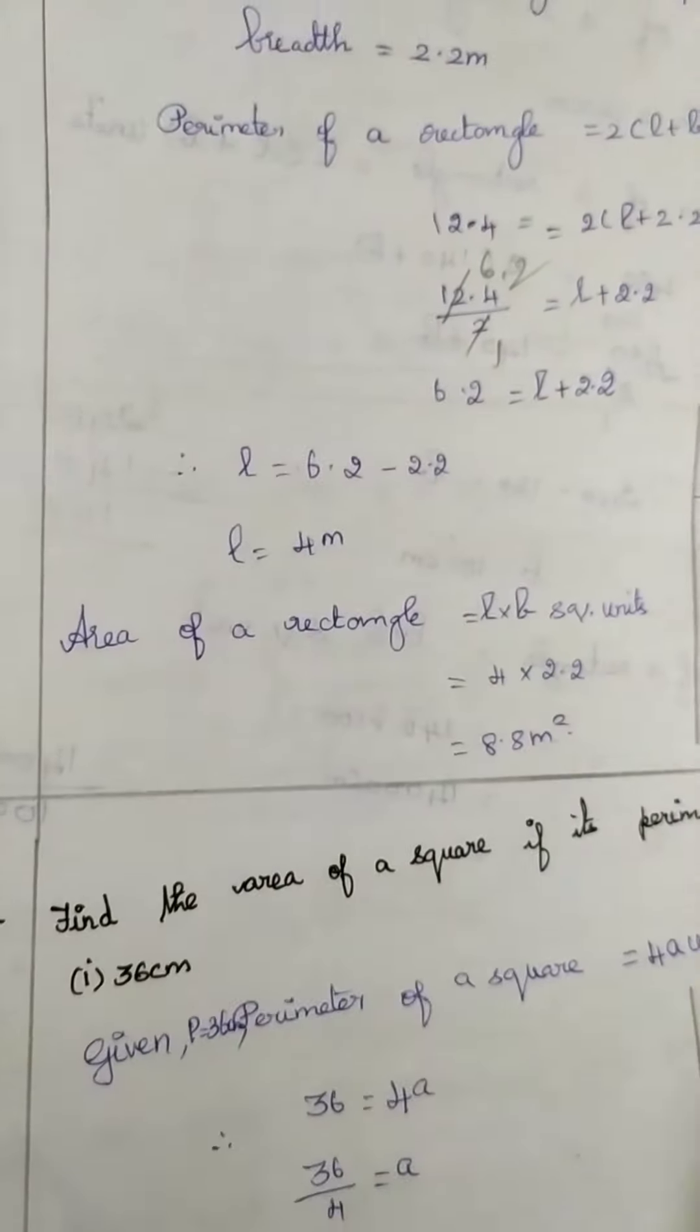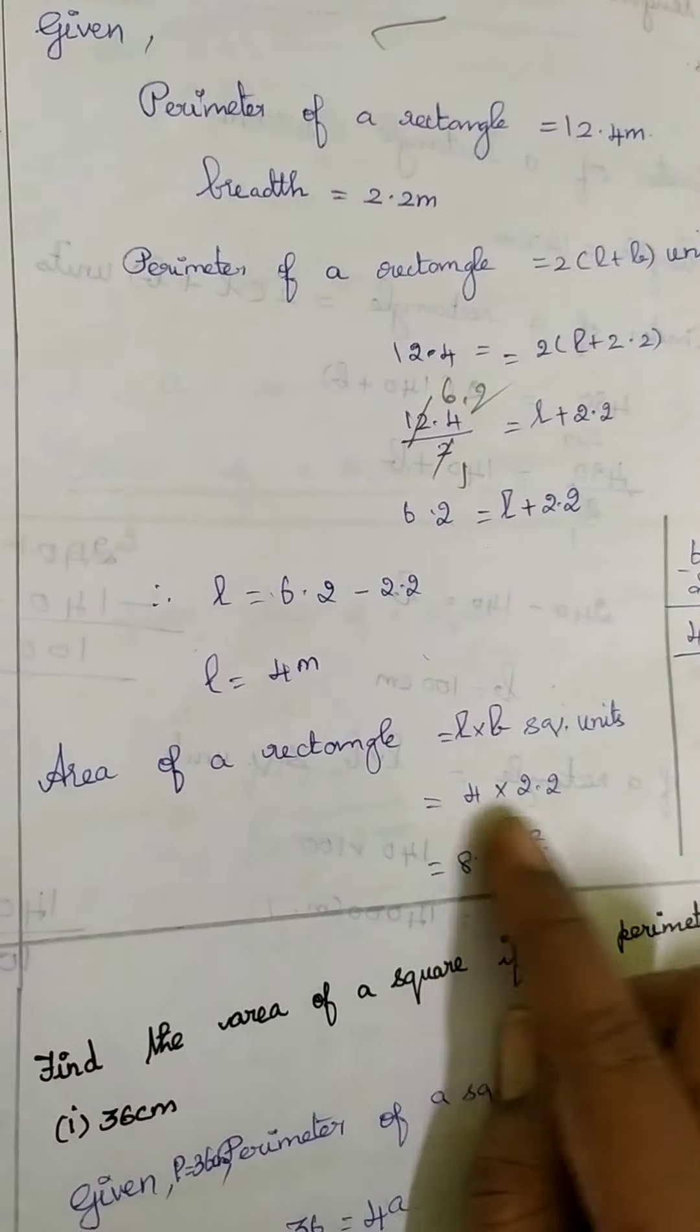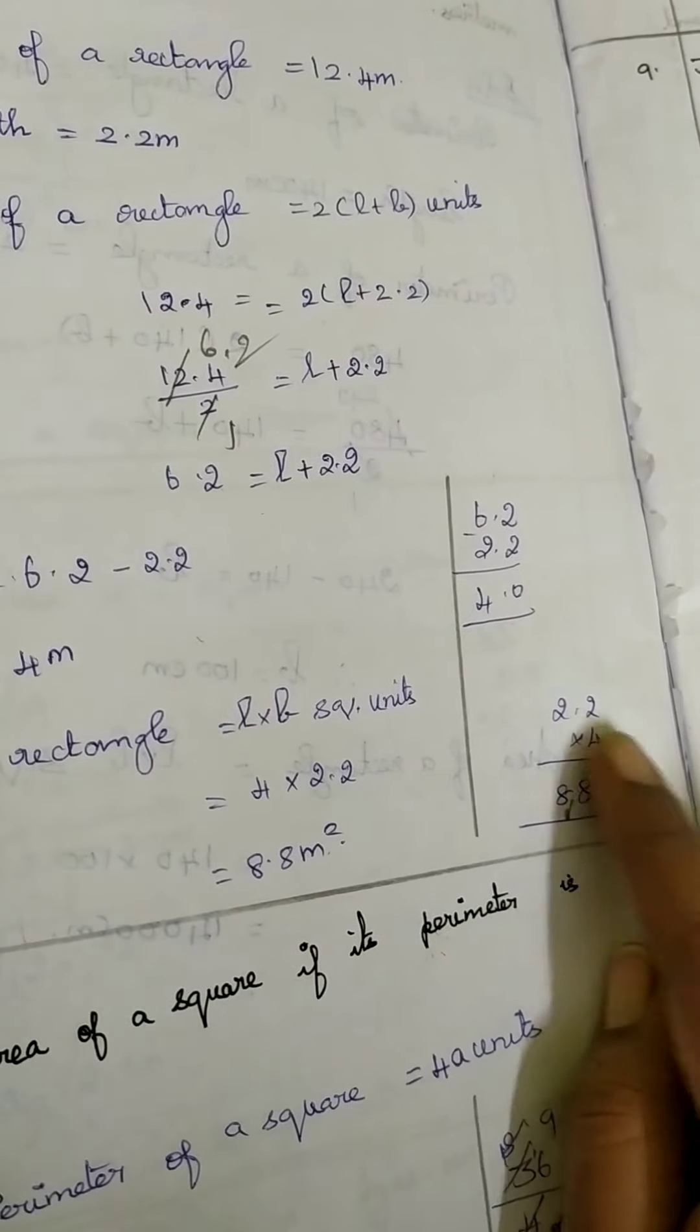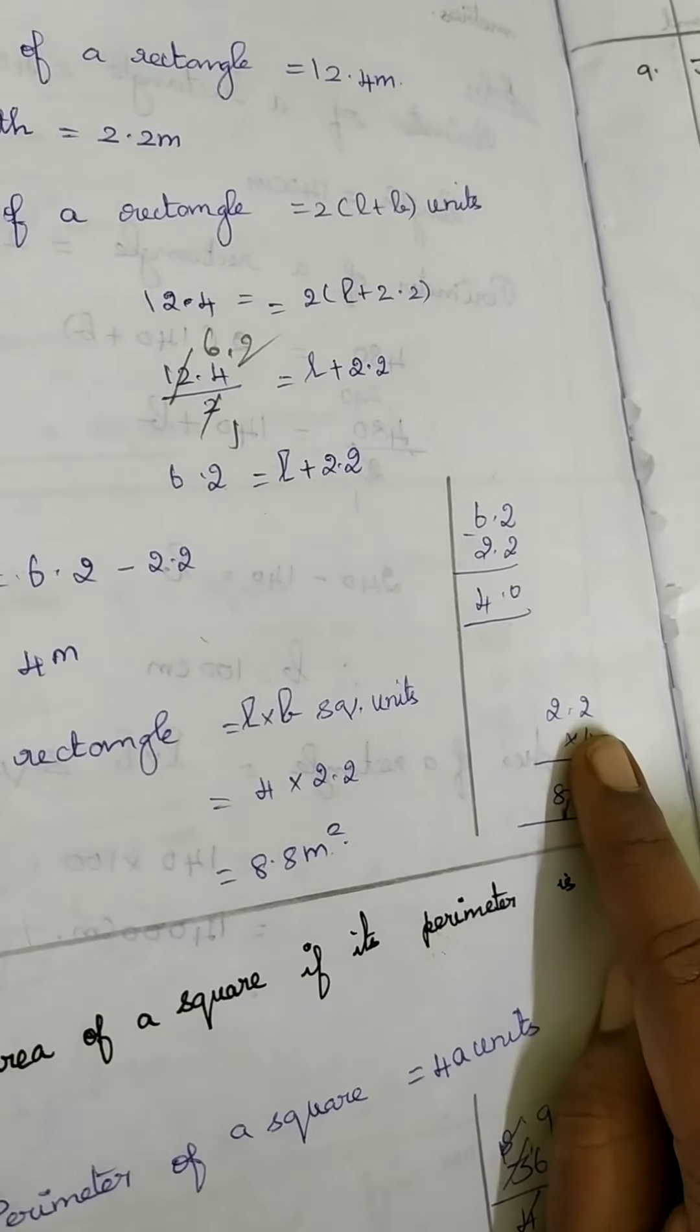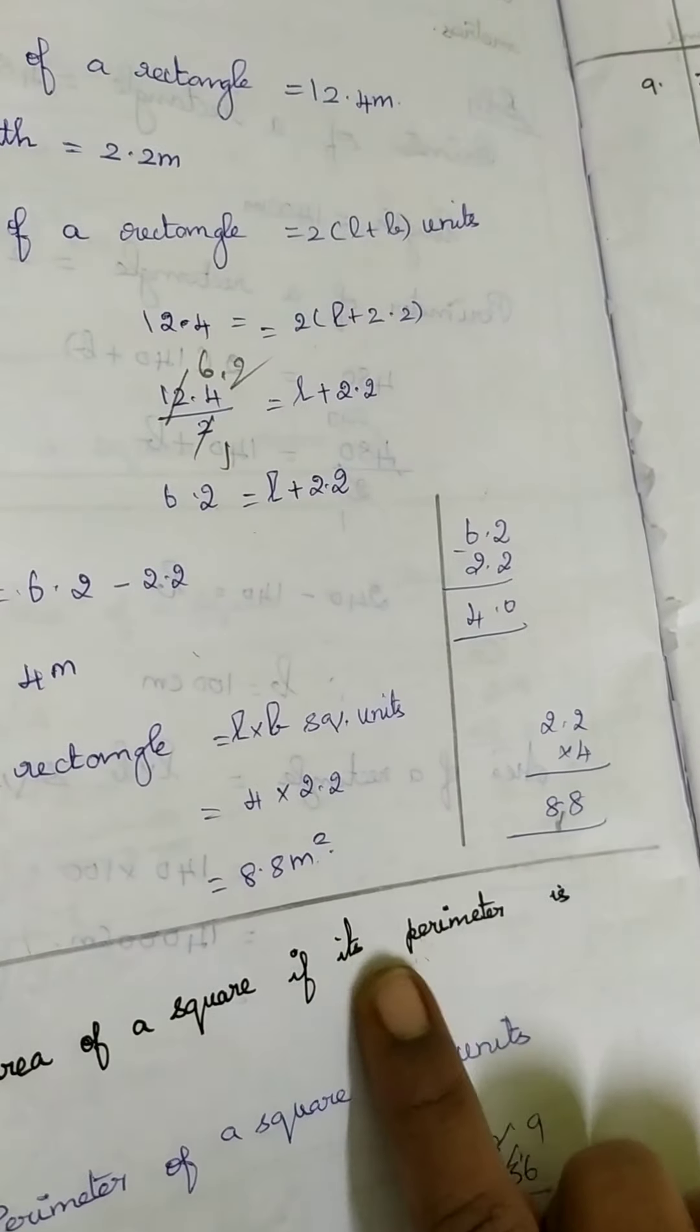And we are going to substitute in the area of a rectangle. Area of a rectangle is equal to length into breadth square unit which is equal to 4 into 2.2. So you are going to multiply 22 by 4. It is 88. After one digit you have to place the decimal point. So 8.8 meter square. Your answer is 8.8 meter square.